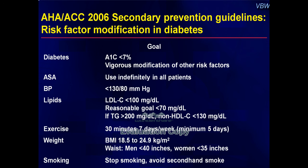Now after you have had a heart attack, there is the concept of secondary prevention to prevent a further attack. This is more or less similar to primary prevention, except that aspirin is added for every patient who has had an attack — unless you do not tolerate aspirin, in which case you will be put on a similar medication. The rest — diabetes control, blood pressure control, cholesterol control, exercise, weight control, and smoking cessation — are similar to primary prevention, just that the goals are now more strict.